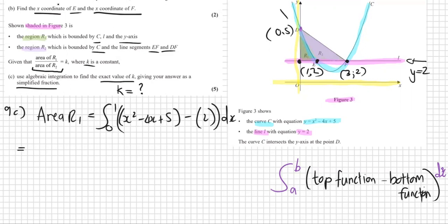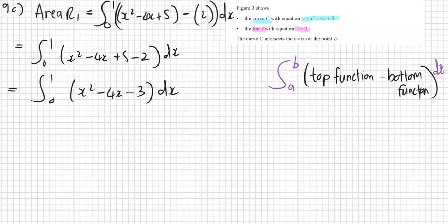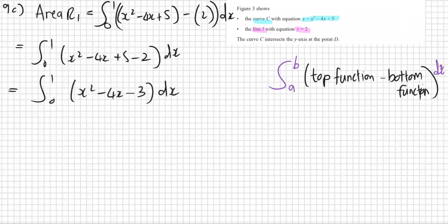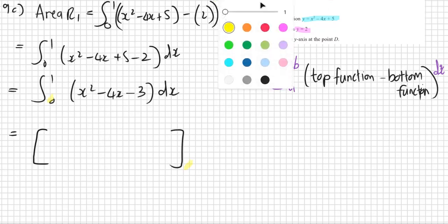For integrals, it's dx. So what's our top function? The curve is above. So the curve is above here, and the line L is below. So you always start with the top one. Area of R1 is from A to B. So what is our A? Our A is our point where it starts, which is at x equals to 0. And our B is where it goes to, which is the x of E, which is 1. So we're working out the area from 0 to 1 of the top curve, which is x squared minus 4x plus 5 minus the bottom one, which is just 2.